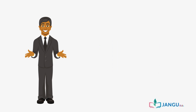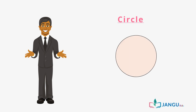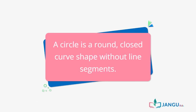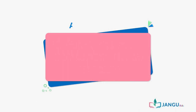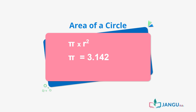The next shape we would learn how to calculate its area is a circle. As we have learned in our previous lessons on plane shapes, a circle is a round closed curved shape without line segments. The formula for calculating its area is pi r squared, where pi has a constant value of 3.142 and r is the circle's radius, which is also the same as half of a circle's diameter.